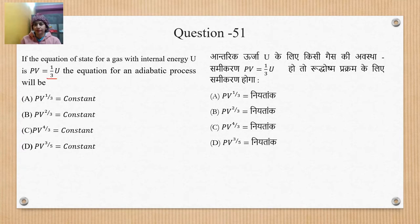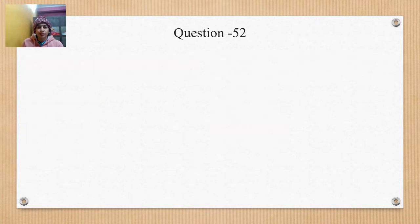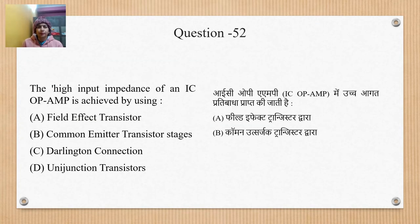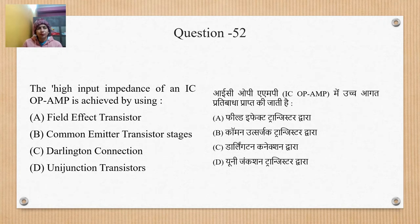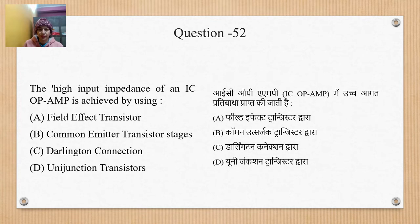Question 52: The high input impedance of an IC opamp is achieved by field effect transistor, common emitter transistor stages, Darlington connection, or unijunction transistor. The UPHC solution given is option C, but FET (option A) is the correct option. Since both options may be correct, we can challenge it and we will do so.